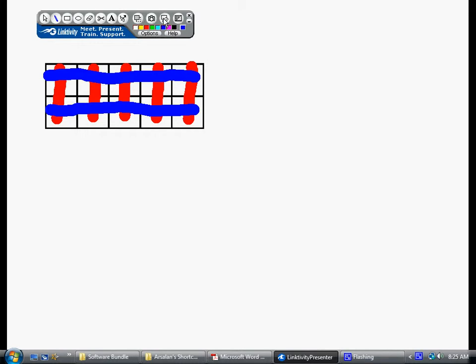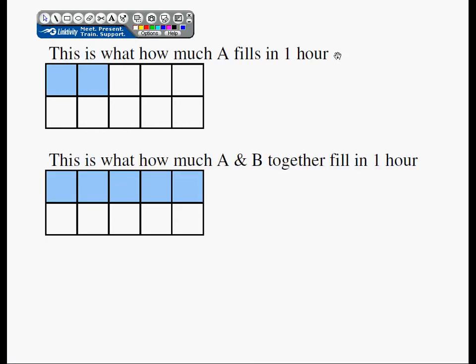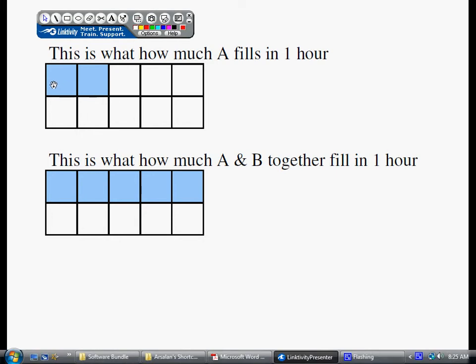Based on our previous conclusion, we can say this is how much machine A does on its own in one hour. And this is how much the two machines do when they work together in one hour.